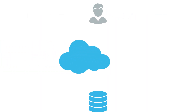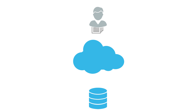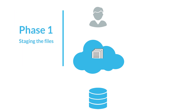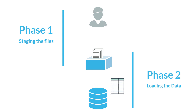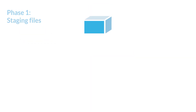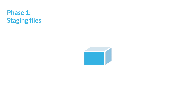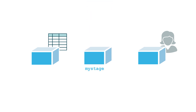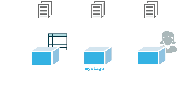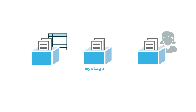Bulk loading is performed in two phases. First, you upload your data files to a location where Snowflake can access the files — this is referred to as staging your files. Then, you load the data from these staged files into your table. Snowflake lets you stage files in internal locations called stages; each table and user has a stage. Snowflake also supports creating named stages. Internal stages enable convenient and secure storage of data files without requiring any external resources.